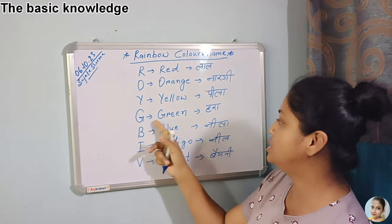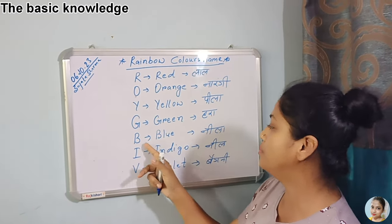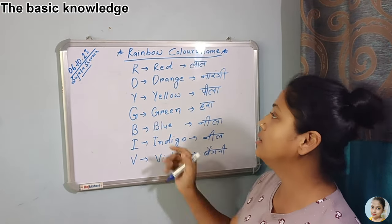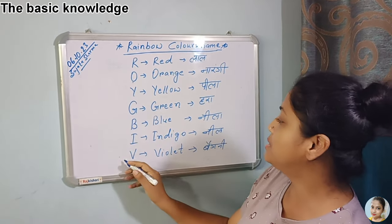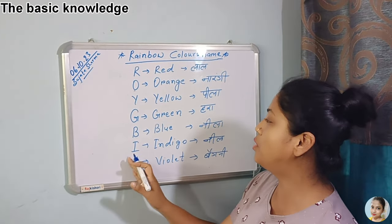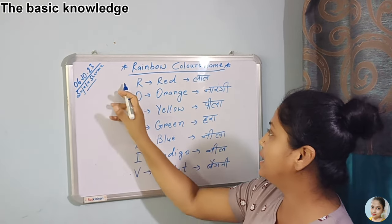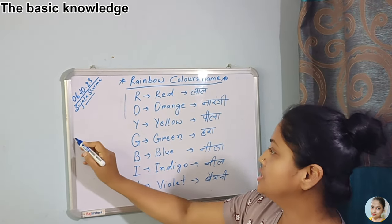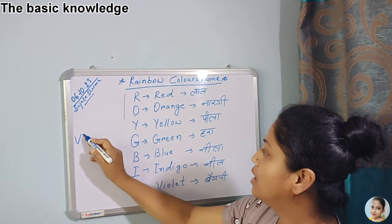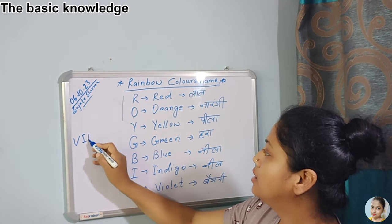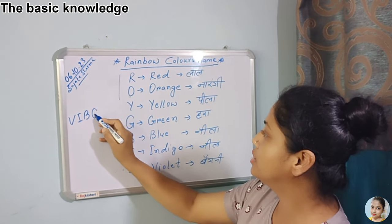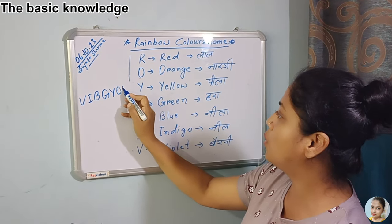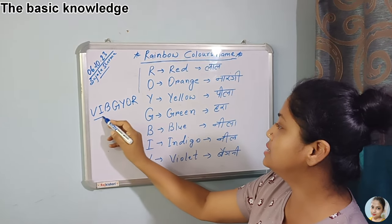Y for yellow, G for green, B for blue, I for indigo, V for violet. So how do you remember this rainbow color? It's very easy — we will remember this like VIBGYOR.